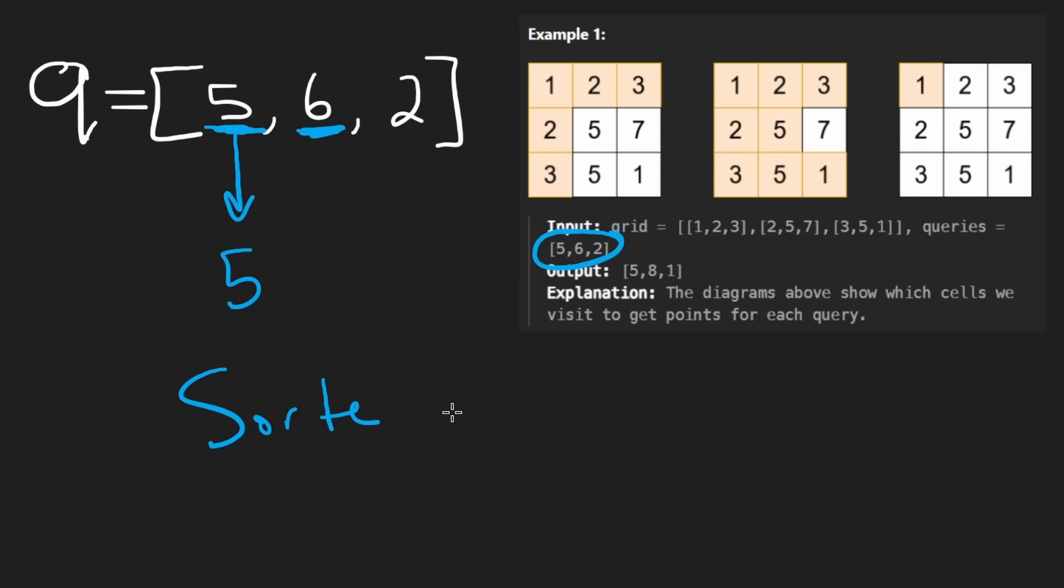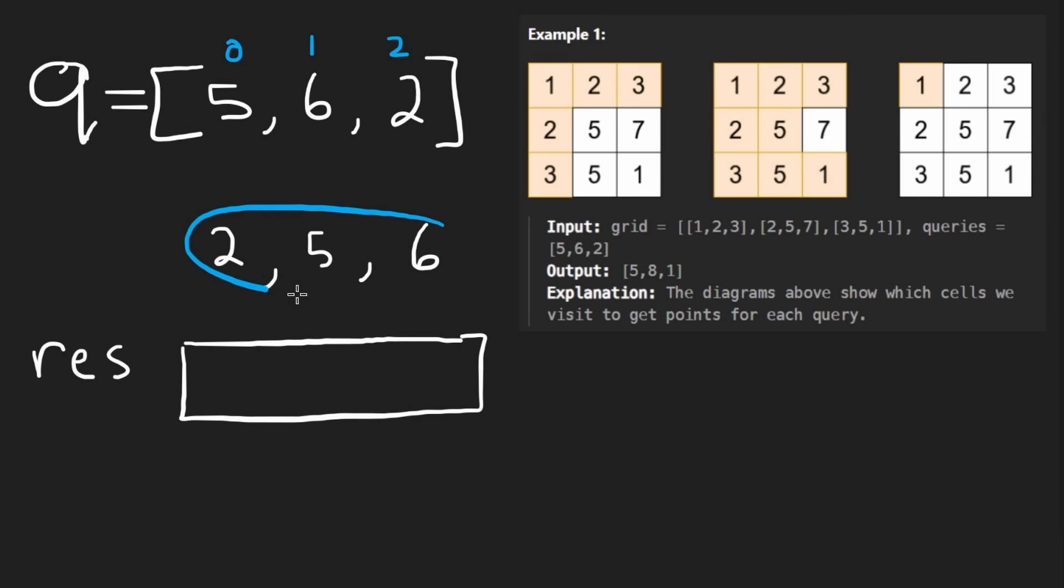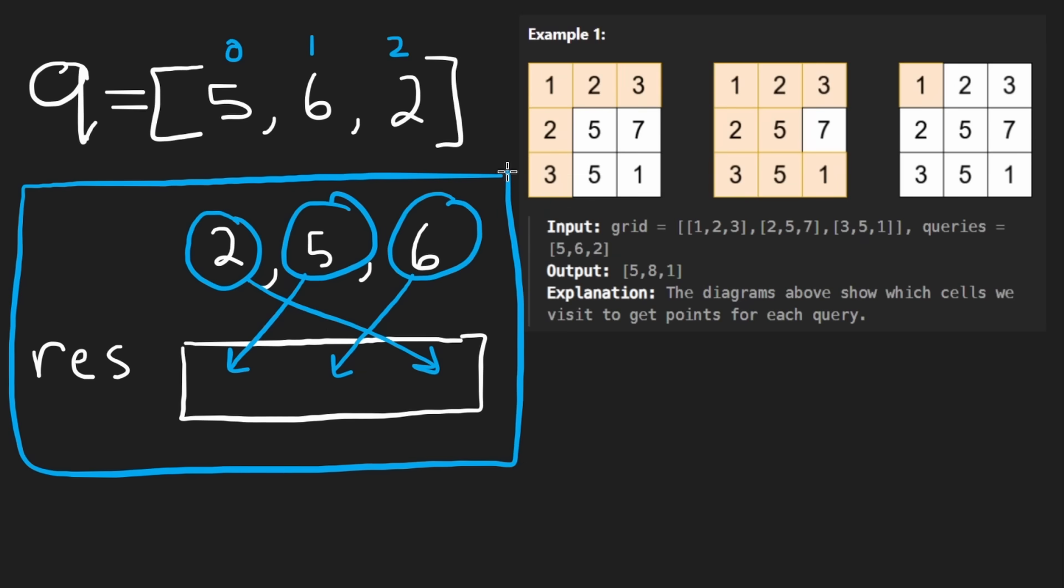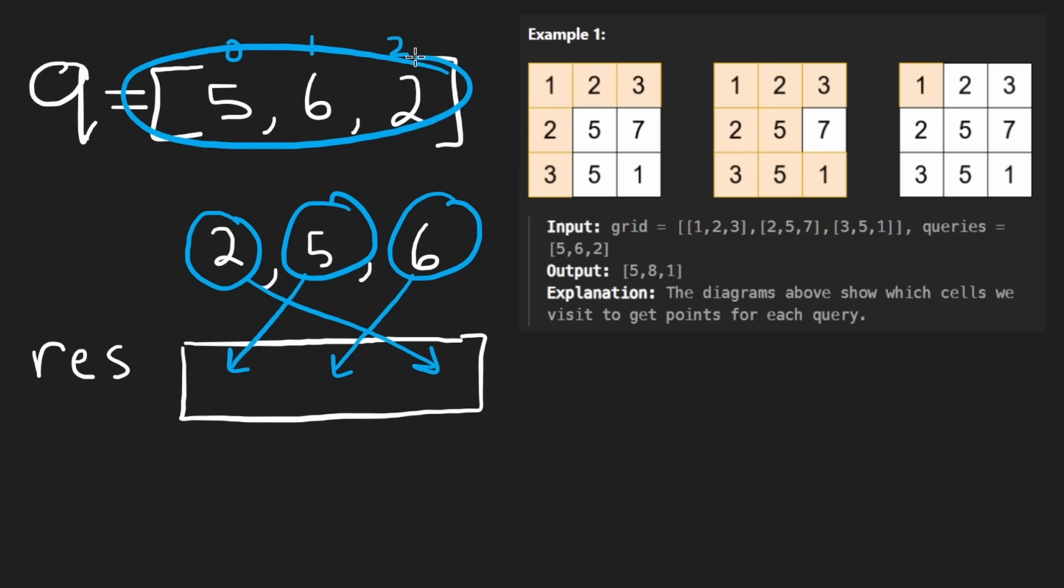So if we did sort the input, suppose I sorted my queries to be something like this. Let's preserve the original indexes though, at least in the drawing. And then I sort these queries. And then I actually get 2, 5, 6. We know that when we fill in our result array down here, that since we are going through the queries now in sorted order, when I answer this query over here, I can't put it in the first position. I know that this 2 was actually at index 2. So when I do answer that query, I have to put it over here. 5 I'm going to have to put over there. And 6 I'm going to have to put over there.